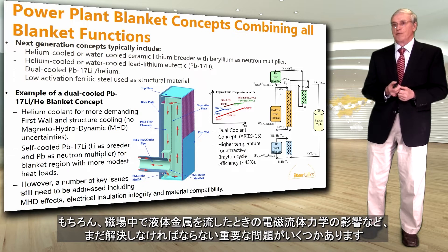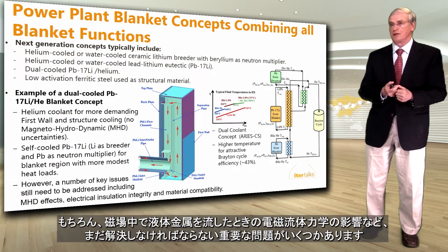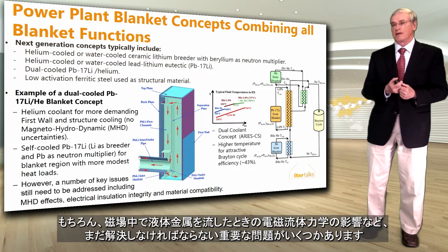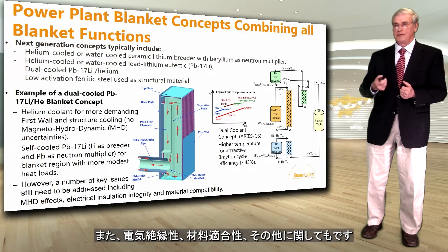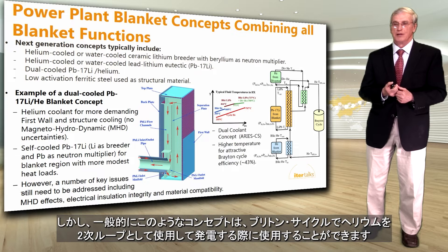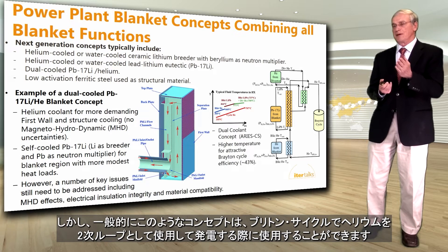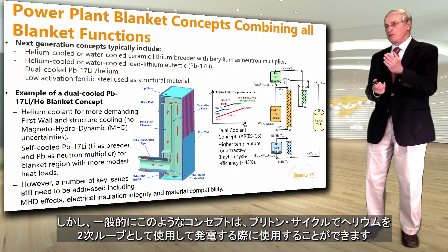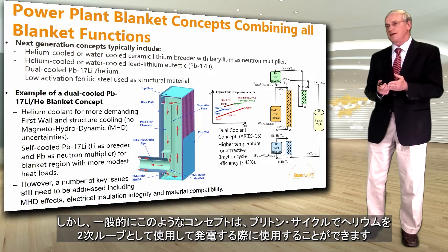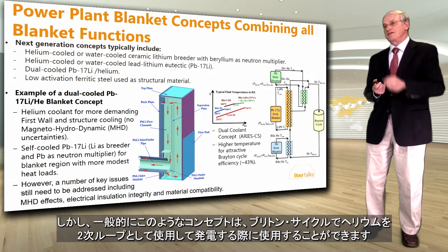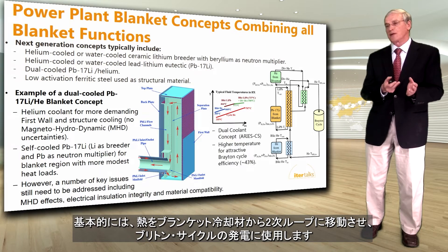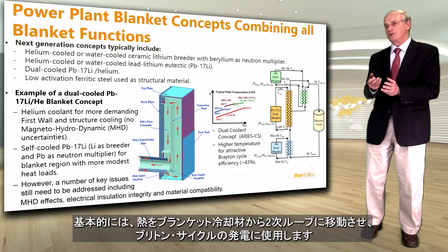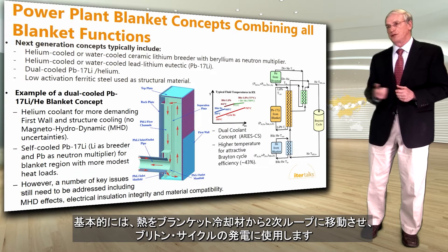There are a number of key issues that still need to be addressed, including the effect of magnetohydrodynamics when flowing a liquid metal in a magnetic field, and also electrical insulation integrity, material compatibility, and others. Typically such a concept can be used with a Brayton cycle to generate electricity, using helium as a secondary loop where the heat is transferred from the blanket coolant to the secondary loop, which is then used to generate electricity.